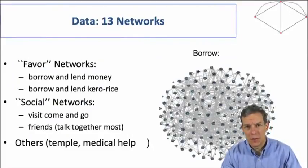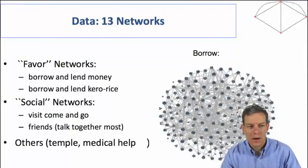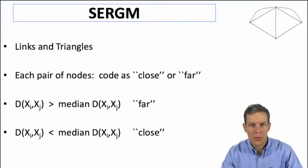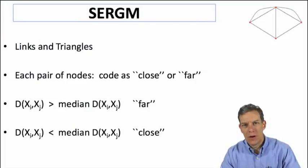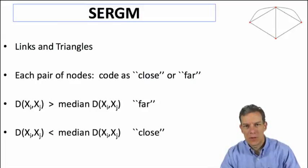We're going to use the data we talked about earlier about the network structure in 75 Indian villages in Karnataka. We have a whole series of networks — favor networks, various borrowing and lending ones, who comes to your house, friends, and other kinds of things. Based on those networks, we'll build a simple statistical exponential random graph model.